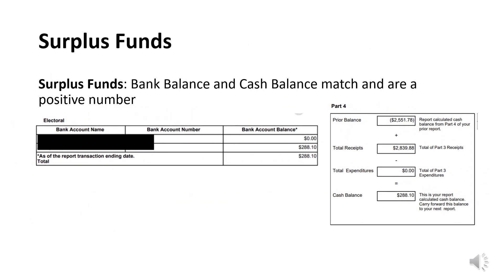If the bank and cash balances match and are a positive figure, this means the campaign has surplus funds. Surplus funds cannot be paid to the candidate or the committee. Instead, they need to be disposed of in one of the following ways: one, return pro rata to the contributors; two, paid to the state central committee of the political party of which the candidate is a member; or three, paid to the local central committee of the political party of which the candidate is a member in the county in which the candidate resides or seeks to represent.